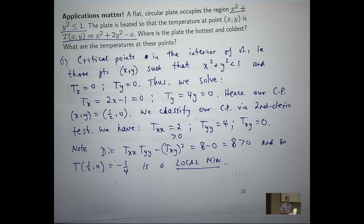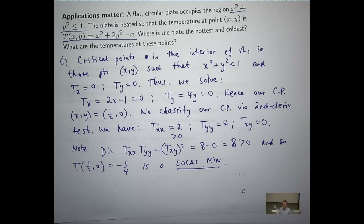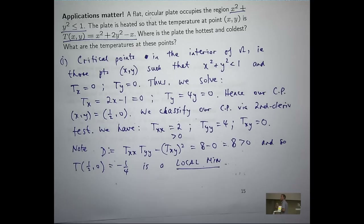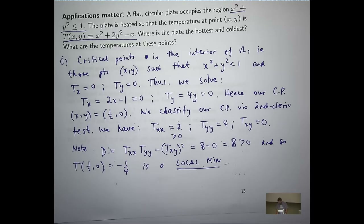So we have a local minimum temperature. If I substitute x equals one half and y equals zero, I'm going to get one quarter minus one half, which is minus one quarter. So I've located the position of a local minimum and calculated the temperature value at that point. Sometimes there are cases where you'll have more than one critical point — in this case there's only one — and you'd have to test each critical point separately.